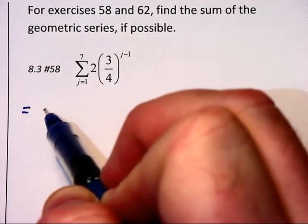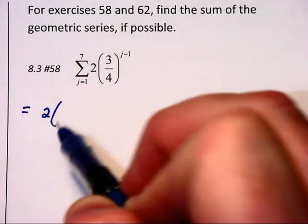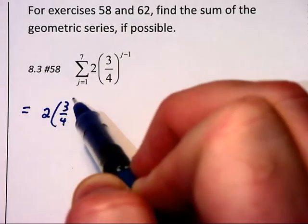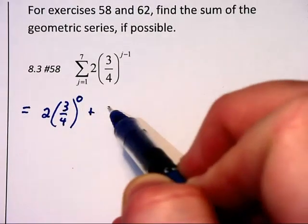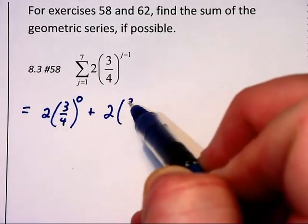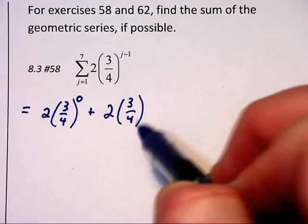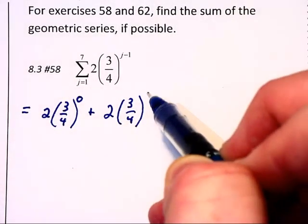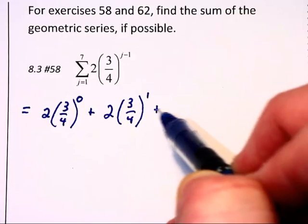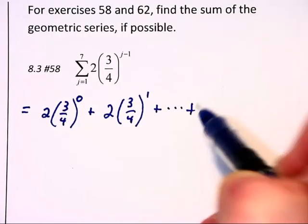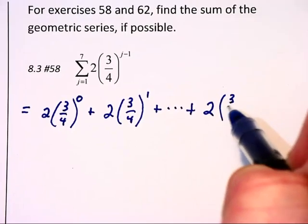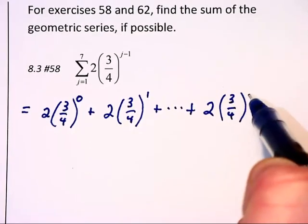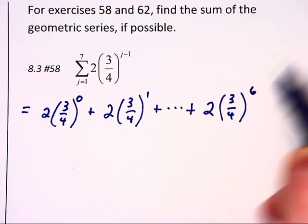we will have 2 times 3 fourths, which is raised to the 1 minus 1, which is raised to the 0th power, plus 2 times 3 fourths raised to the 2 minus 1st power raised to the 1st power, plus a lot of terms in the middle, plus finally we will have 2 times 3 fourths raised to the 7 minus 1, which is the 6th power.